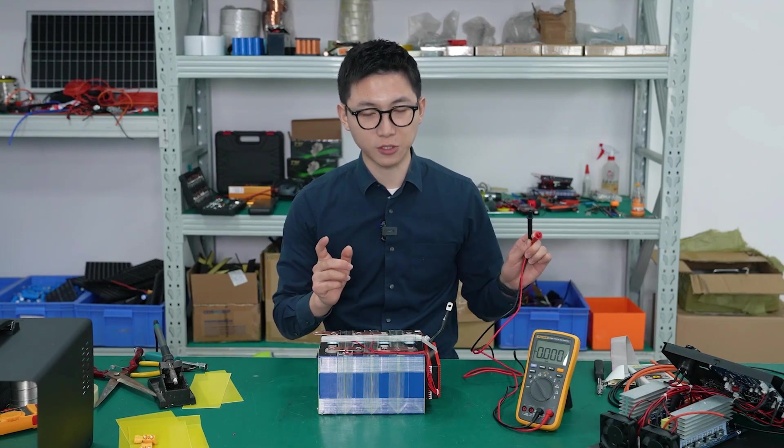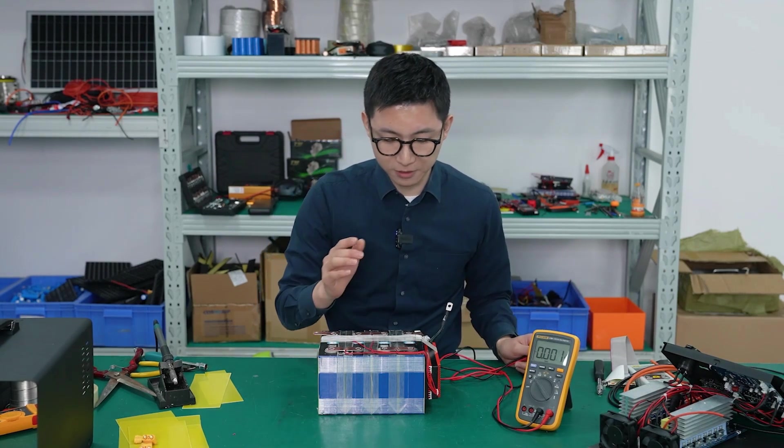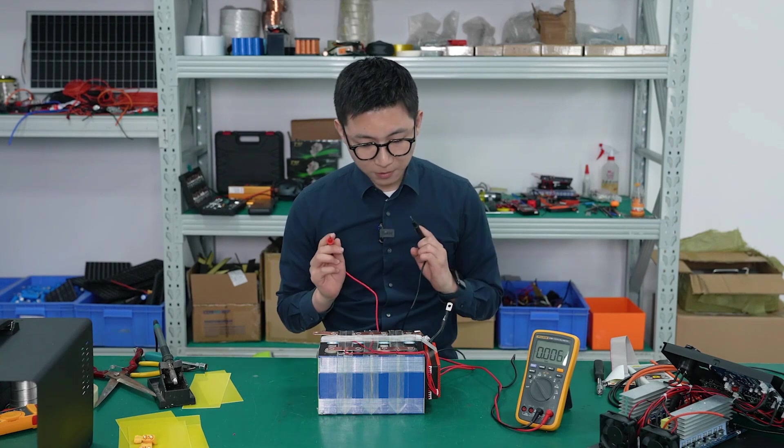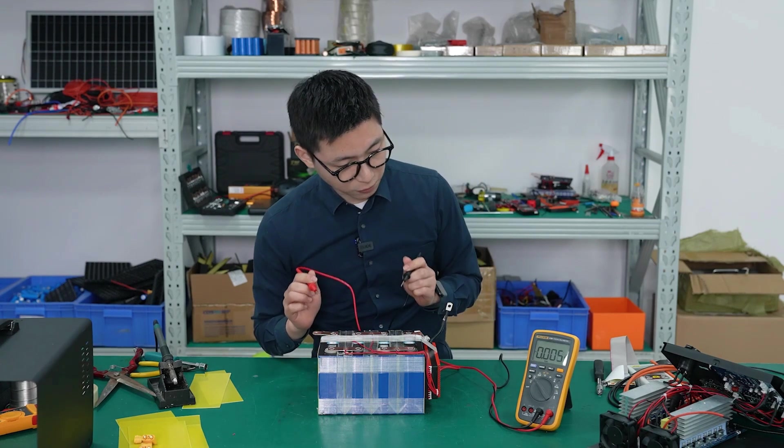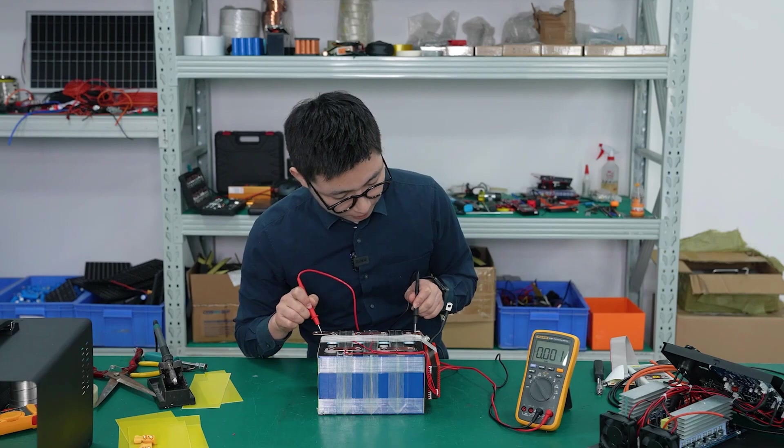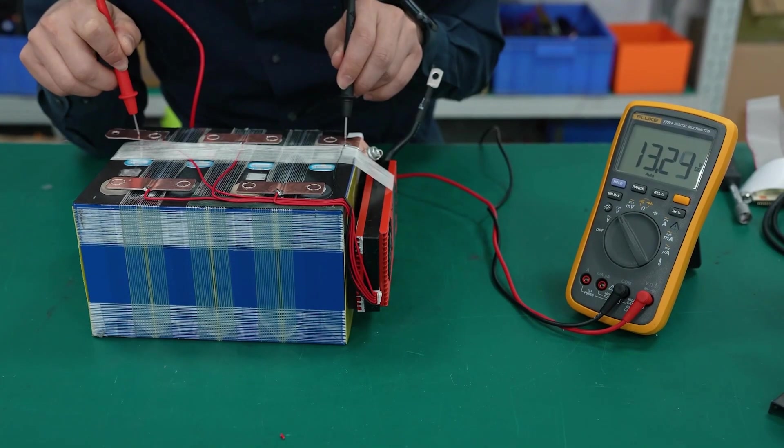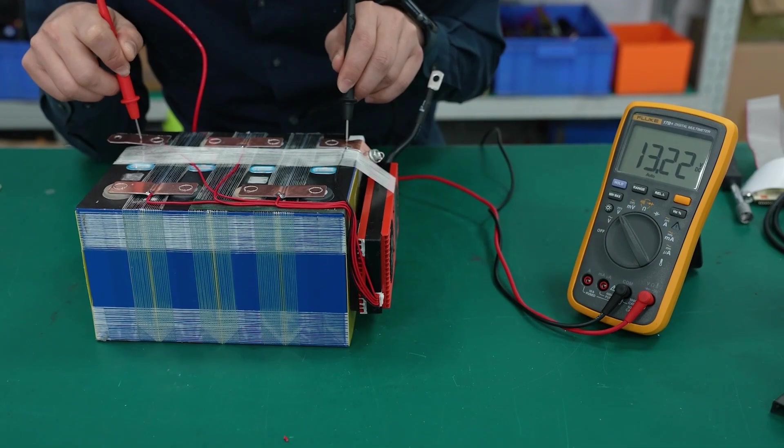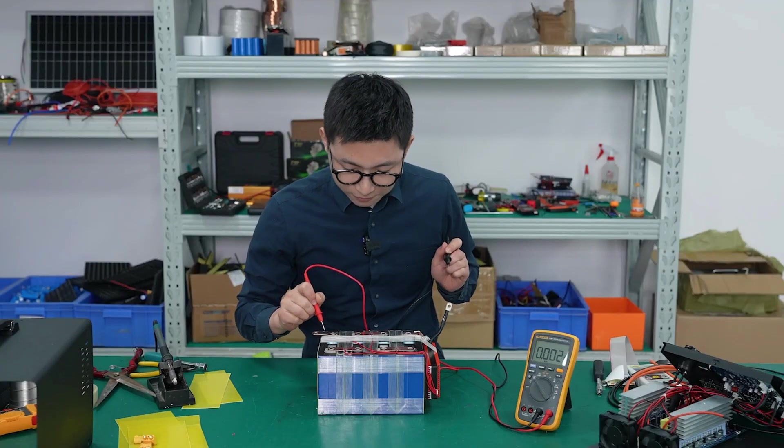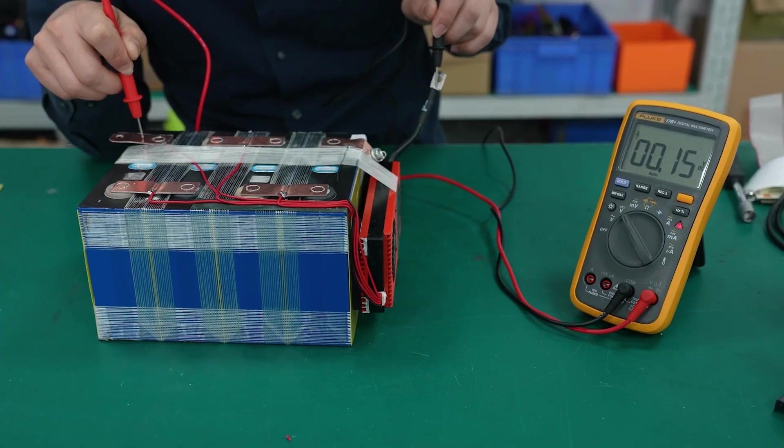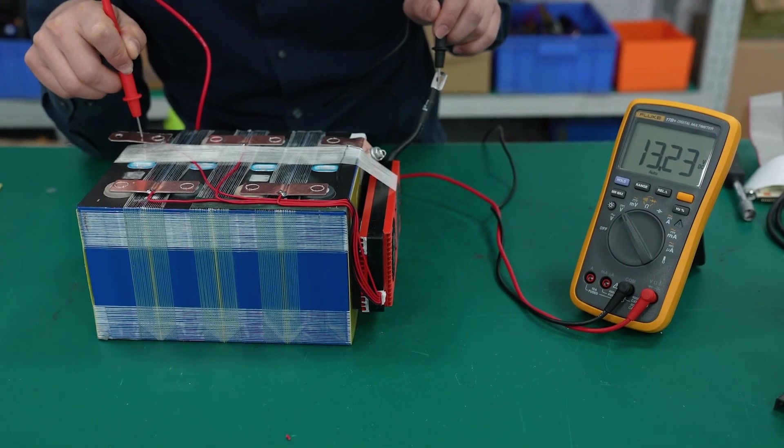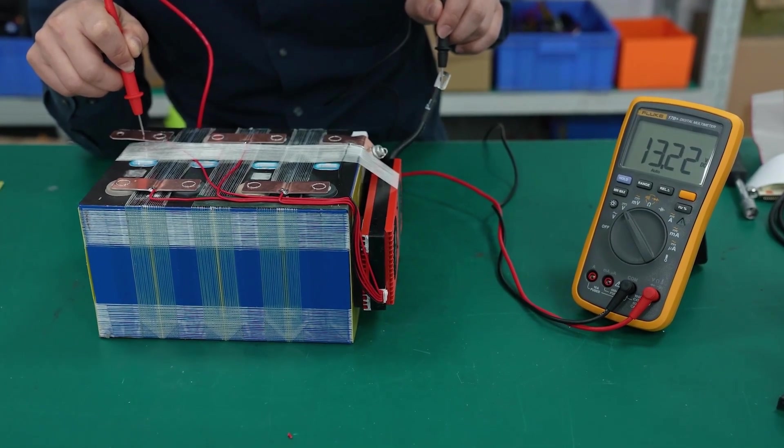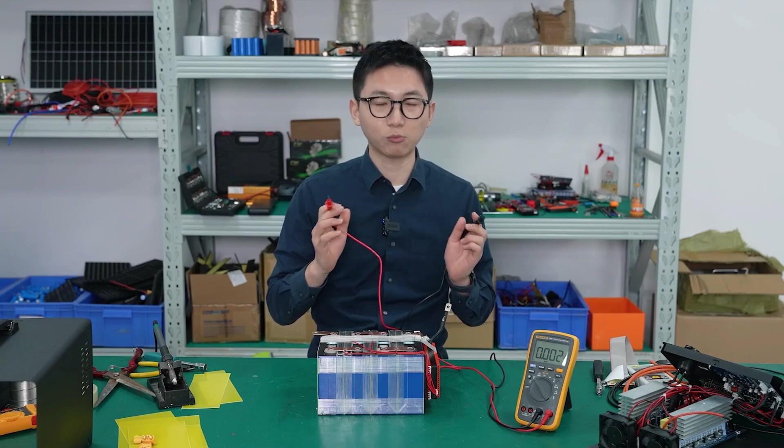And next part is very important. We have to use the multimeter to check the voltage before the BMS and after the BMS. So before the BMS, we have to know the voltage. We put it here, and now we can see the total voltage of the battery is 13.22 volts. Now after the BMS, you can see the voltage is still the same. So there's no problem with the BMS.